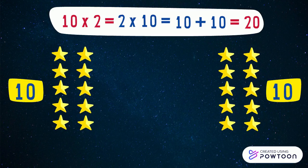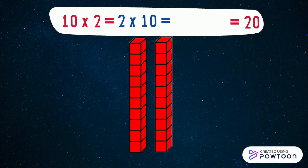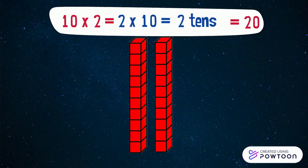We know that the number 10 has one 10, so we can replace every 10 stars by one 10. So 10 times 2 equals 2 times 10 equals 2 tens equals 20.